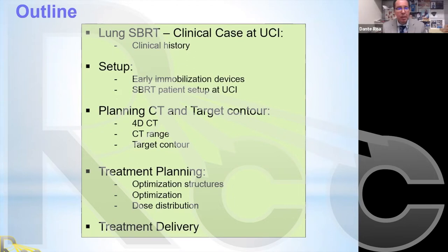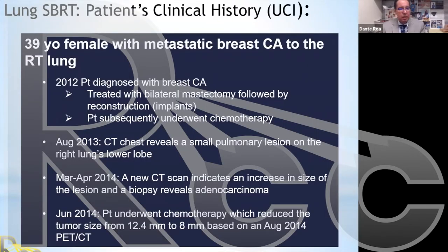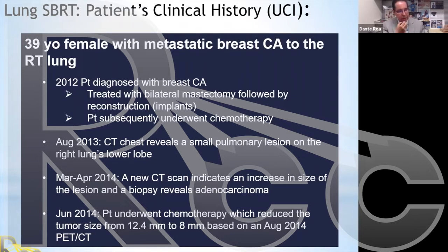The case involves a 39-year-old female initially diagnosed with breast cancer as her primary tumor, which then metastasized to the right lung. The diagnosis began in 2012, when her breast cancer came to light. As a result, she was treated with bilateral mastectomy followed by reconstruction, and subsequently underwent chemotherapy.